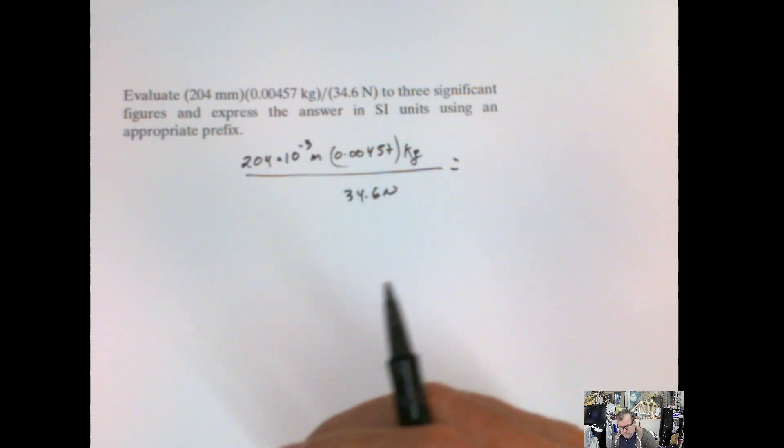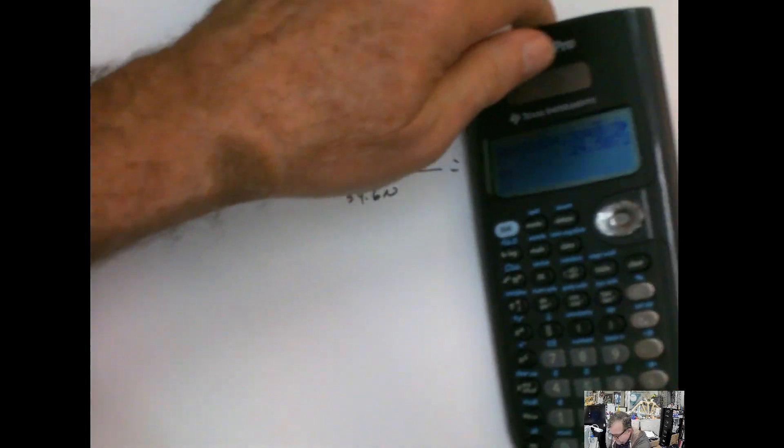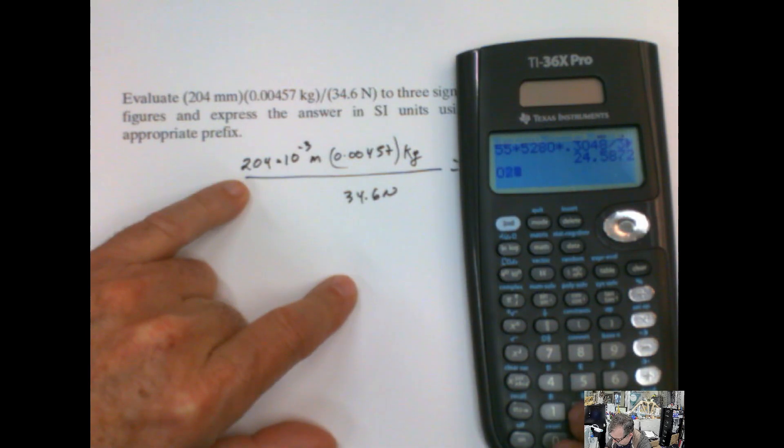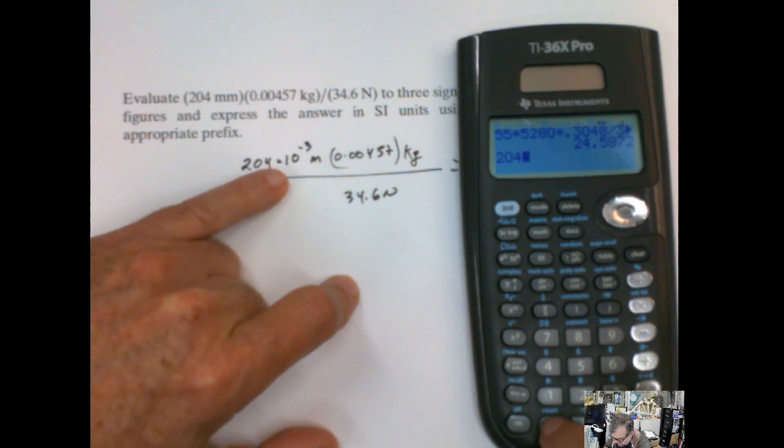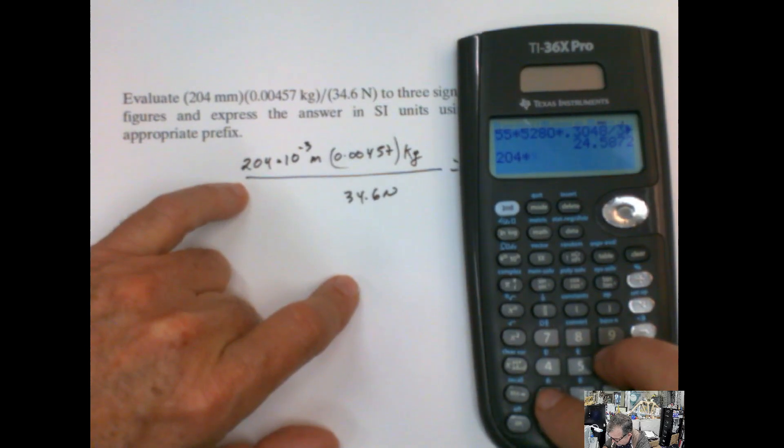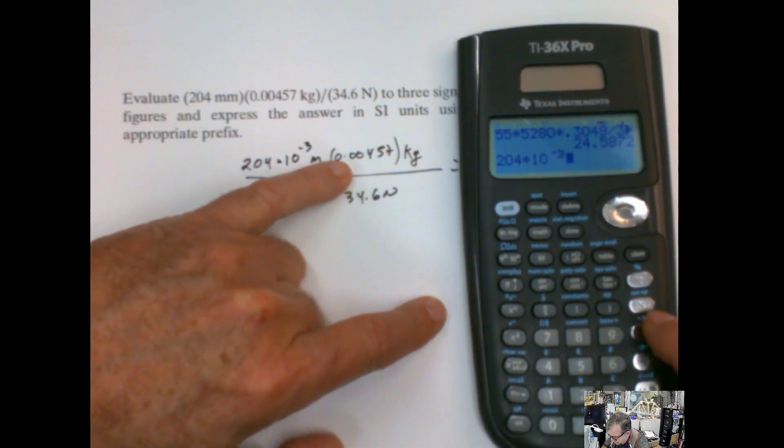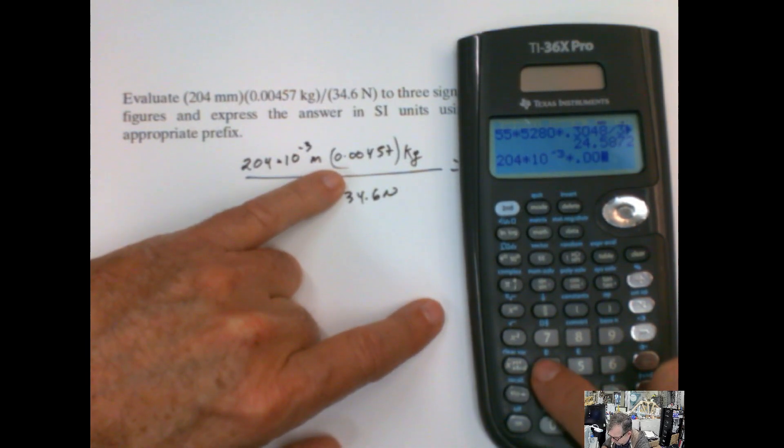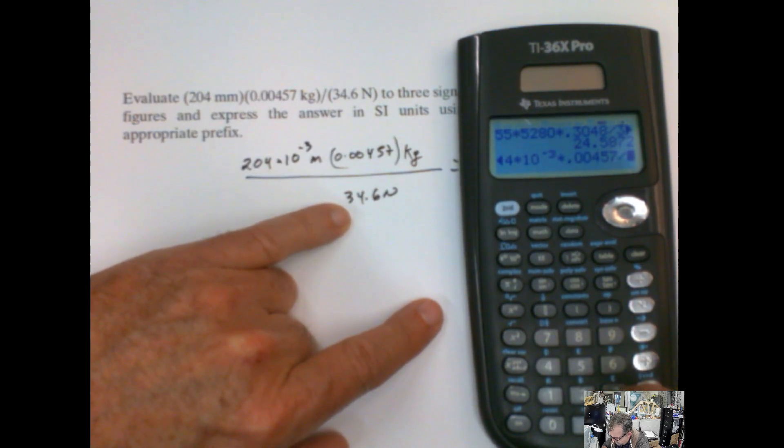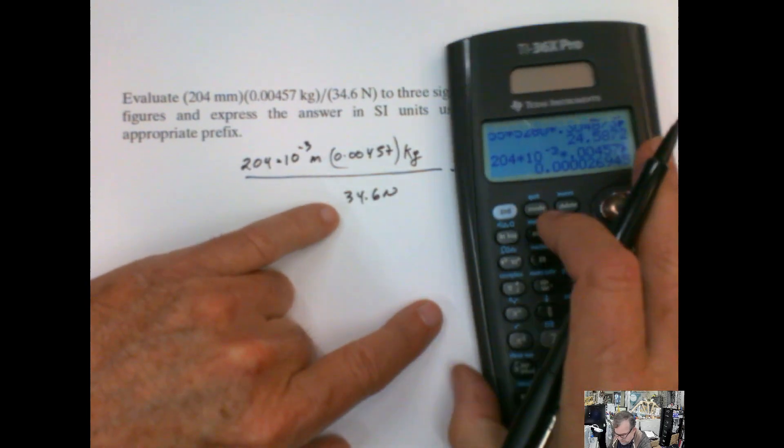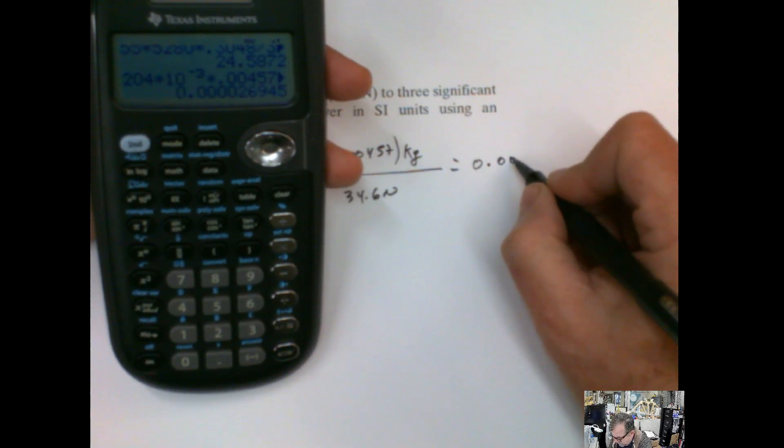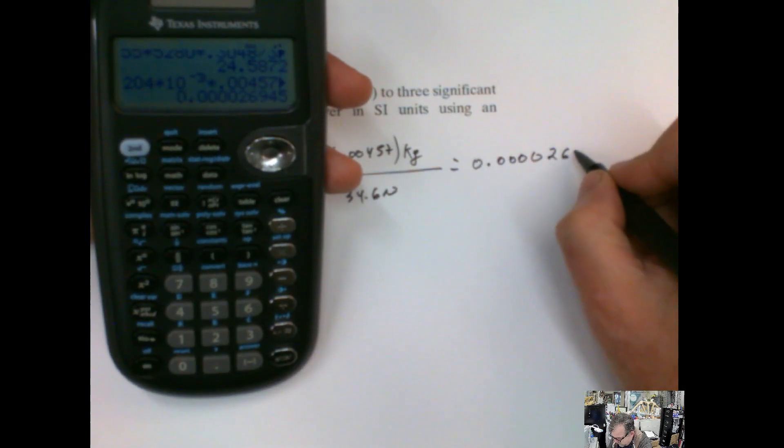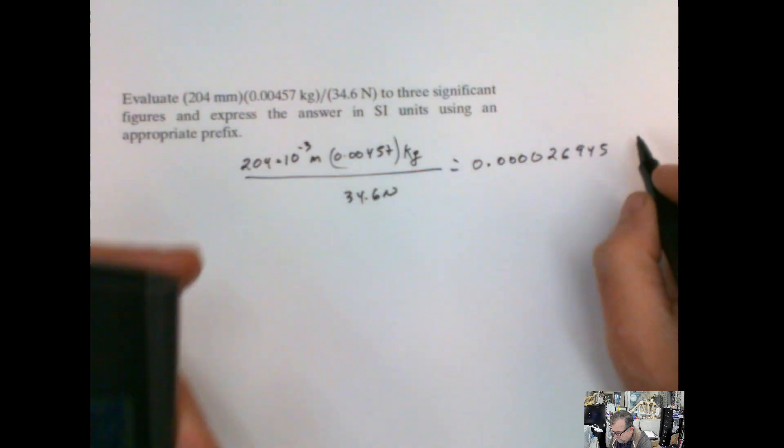Let's see what this number is giving us here. So 204,000 times 10 to the negative 3 times 0.00457 divided by 34.6. And that number is 0.0000026945. What units are these?